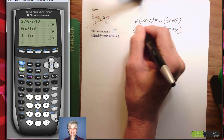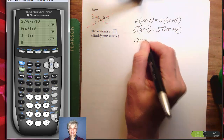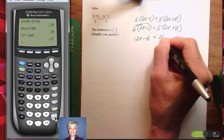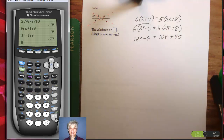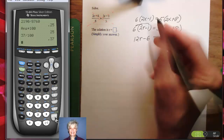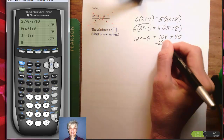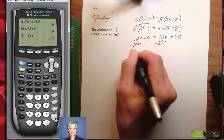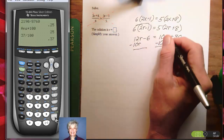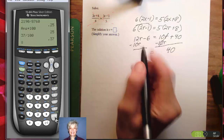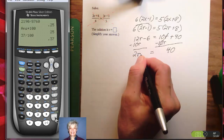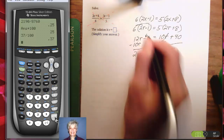Now I'm going to distribute here. That will give me 12r minus 6, and over here I'll have 10r plus 40. Now, this is a mixed equation. I need to get my variable terms together on one side of the equal sign, and my constant — which are pure number terms — together on the other side. So I'm going to subtract 10r from both sides of the equation. 10r minus 10r is 0, I'm left with a 40. Over on the left side, 12r minus 10r is 2r, and I bring down my minus 6. Don't forget to bring the minus sign with the 6.